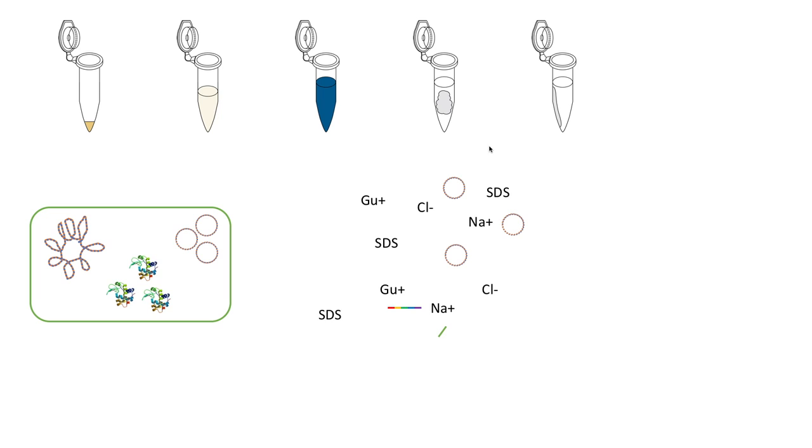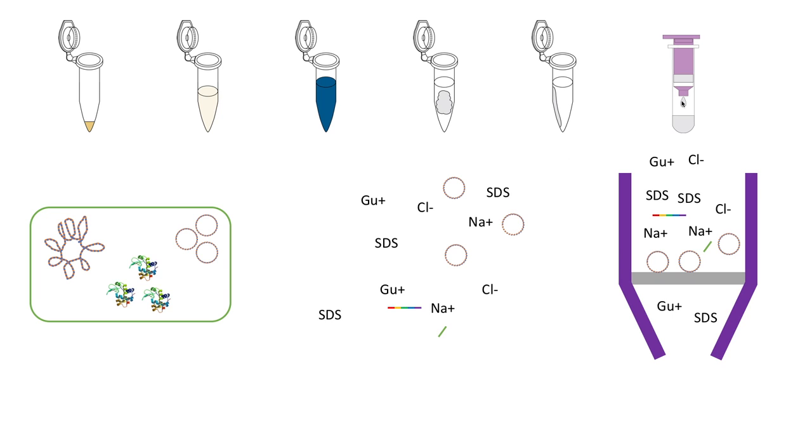We'll be doing that with a spin column that has a silica matrix. Under high ionic strength, the silica will selectively bind to DNA. Once the DNA is bound, we can wash the column until we have removed all of our contaminants. Once we're ready to elute, we will switch to a buffer that has a low ionic strength. Under these conditions, the DNA will release from the silica matrix, and we'll end up with our purified plasmid DNA.